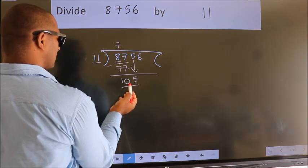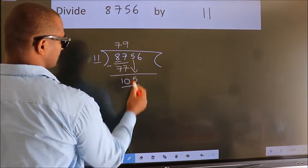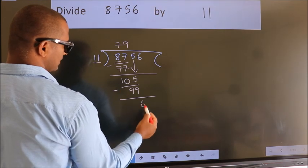A number close to 105 in the 11 table is 11 nines, 99. Now we subtract. We get 6.